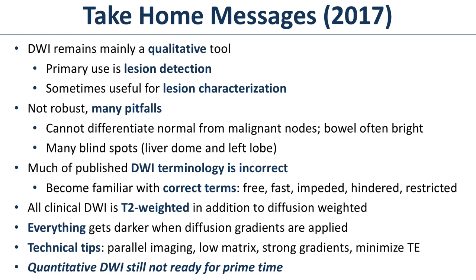Take-home messages: DWI remains a qualitative tool in 2017. Primary use is lesion detection. Sometimes used for lesion characterization like the cholangiocarcinoma case shown, but be very careful. Many pitfalls: you can't tell normal from malignant nodes, bowel often looks bright, many blind spots especially the left lobe of the liver. Radiologists have used wrong terminology for years — everything gets called 'restricted,' which is incorrect. Start thinking: free diffusion versus impeded diffusion, and impeded can be hindered or restricted.